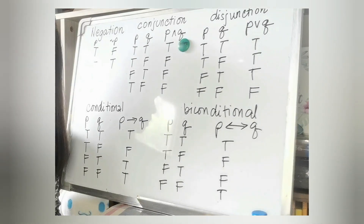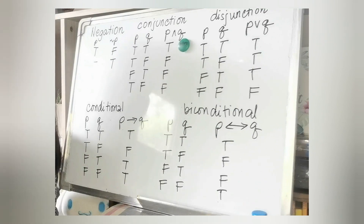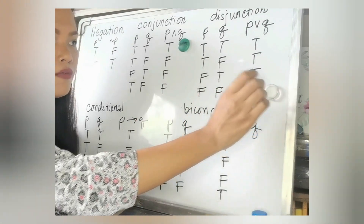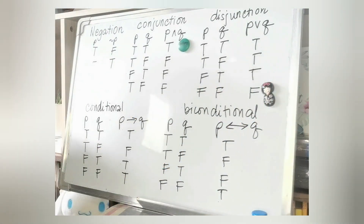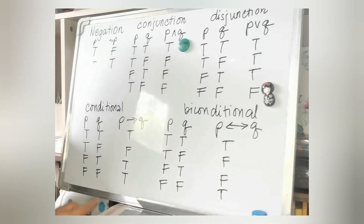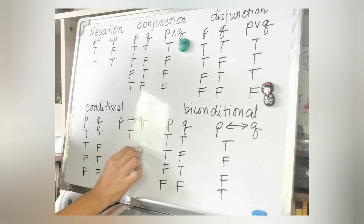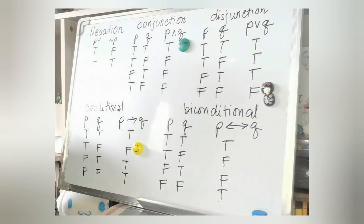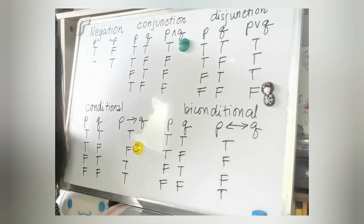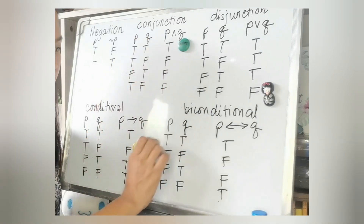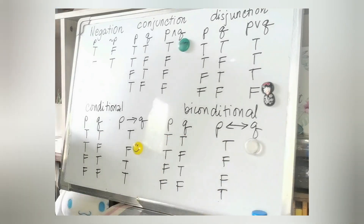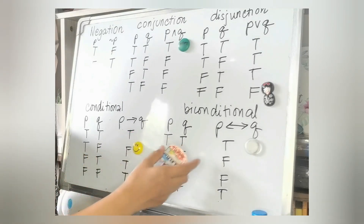That's the case when both P and Q are true. For the disjunction, there is only one case that it is false — that is the case when both P and Q are false. For the conditional, there is only one case that it is false: it's the case when true implies false. And for the biconditional, we have two cases when it is true — that's the case when both propositions have the same truth values: true and true, or false and false.